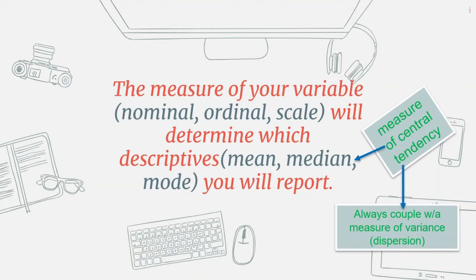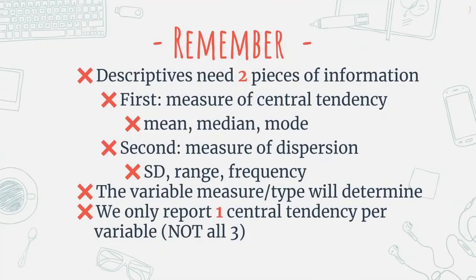The mean, median, and mode are the measures of central tendency. Whenever you're reporting a measure of central tendency, you also couple that with a measure of variance, dispersion, or spread. We want two pieces of information: the measure of central tendency, which is either the mean, median, or mode, and the measure of dispersion, which is the standard deviation, range, or frequency. The variable type determines which one you use, and we only report one measure of central tendency — not all three.